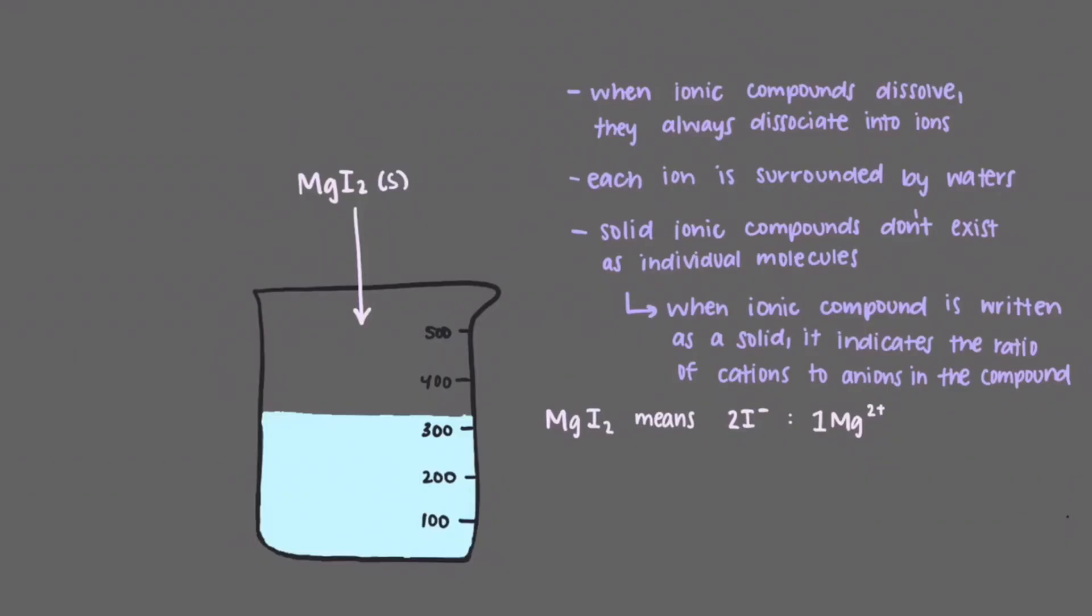Therefore, the correct way to write the product as a result of adding solid magnesium iodide to water is Mg2+ aqueous plus 2I- aqueous.